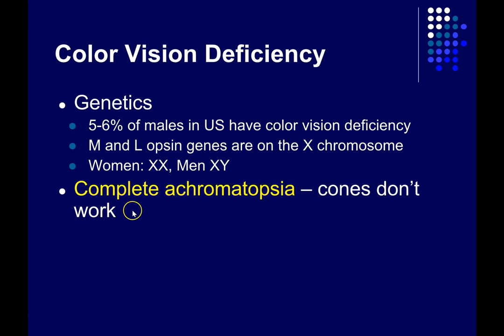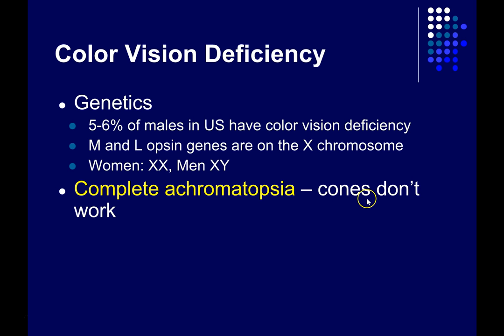Now, the color blindness we've been talking about is really color vision deficiency — difficulty discriminating certain wavelengths, but not complete color blindness. There is, however, a form of complete color blindness called complete achromatopsia. In this case, it's not a problem with the photopigment genes; instead, none of the cones develop properly. It's exceedingly rare — a tiny fraction of a percent of the world's population has this disorder.